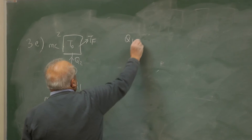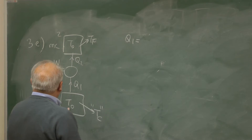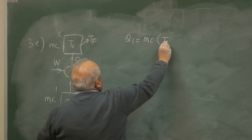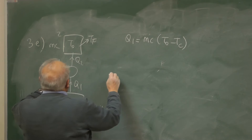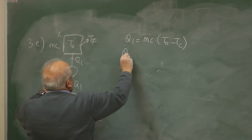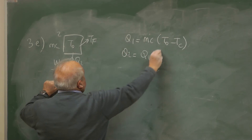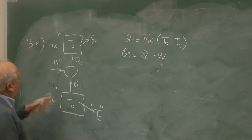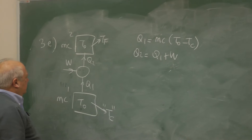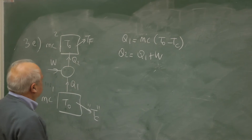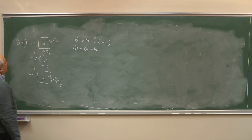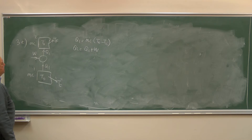Q1 is taken off — we know what the amount is — that's MC times (T0 minus Tc). The energy balance conservation gives Q2 equals Q1 plus W. And of course, this being a reversible machine, W here will be minimum, the minimum work. So the question is what is this minimum work? Let's look at the entropy now.